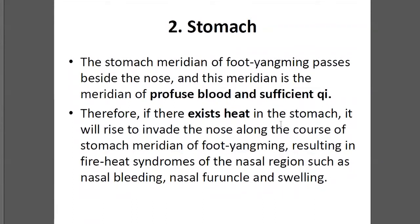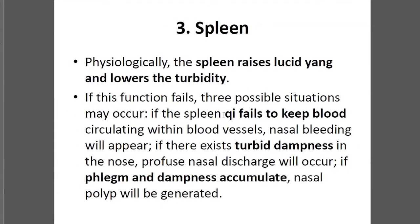Especially for heat — excessive heat conditions — it can cause nose bleeding. And we also talk about the relationship between the Spleen and Triple Burner functions and body fluid circulation. If the Spleen and Triple Burner are not working, it will cause dampness and phlegm accumulation, which then goes to the nose and causes discharging.